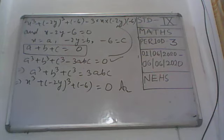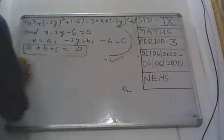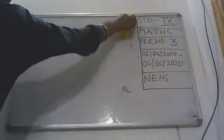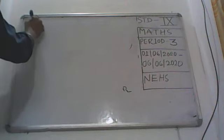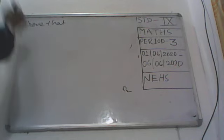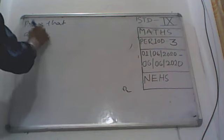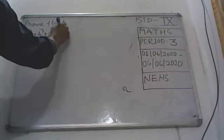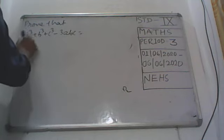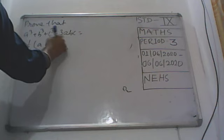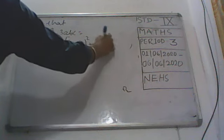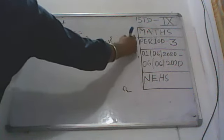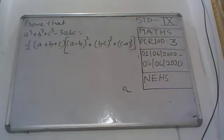So how easy it is! Now one more example we will discuss. This is very helpful also. Prove that a cube plus b cube plus c cube minus 3abc is equal to one half of a plus b plus c, times the quantity a minus b whole square plus b minus c whole square plus c minus a whole square. Now what to do with this?